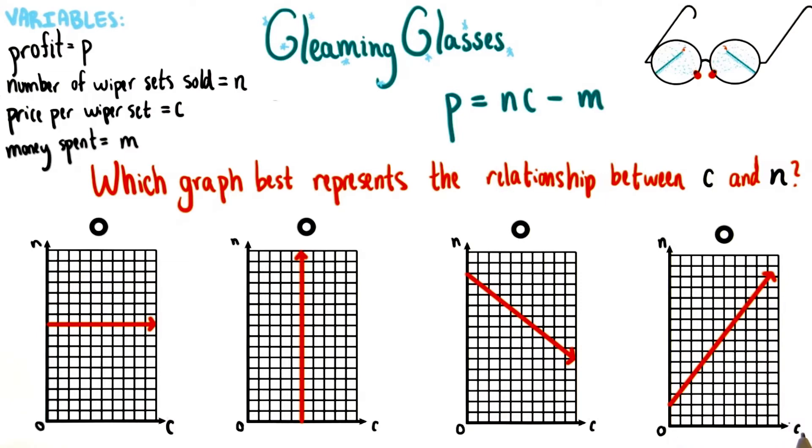If we let the horizontal axis here represent the price of an item, or c, and the vertical axis represent the number of the item we sell, n, which of these graphs best represents the relationship between c and n?